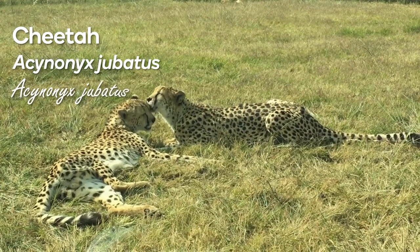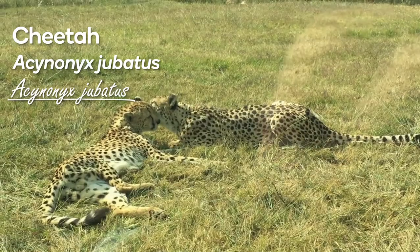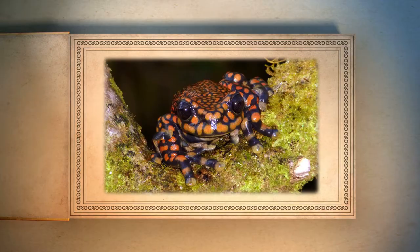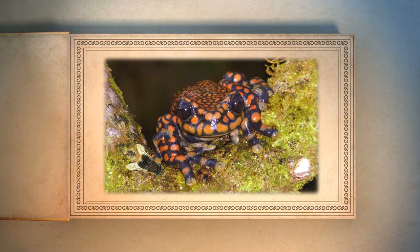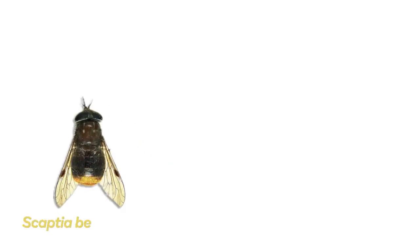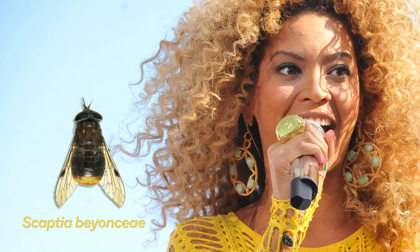and when handwritten it is underlined. When a new species is discovered, the scientific name can be descriptive of the animal, which is the case for this frog and this fly. The fly was named Scaptia beyonceae after Beyoncé, because of the golden hairs on its abdomen.